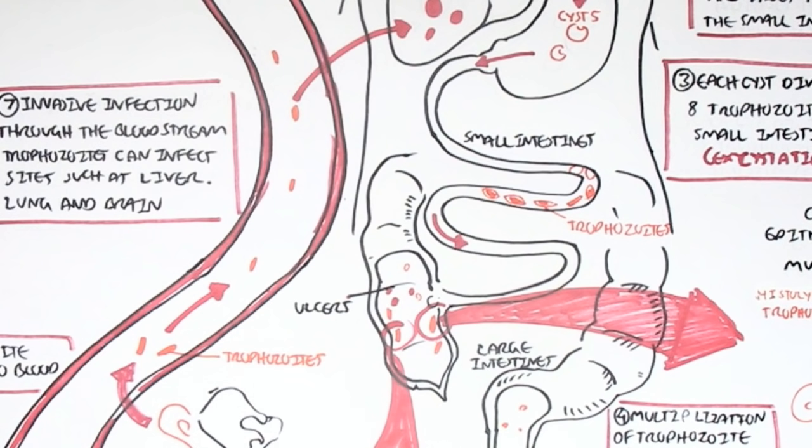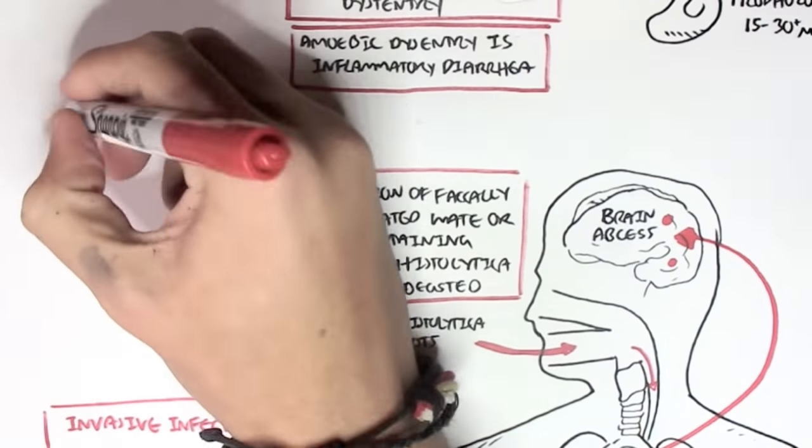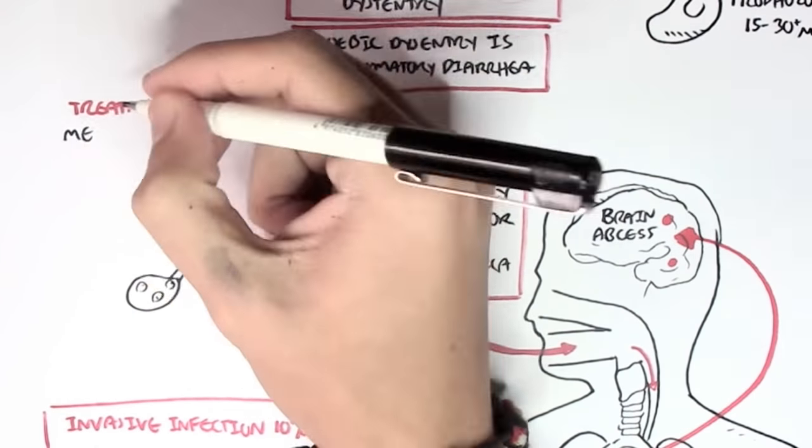Now, how would you treat amoebic histolytica infections, especially the invasive ones? Well, you're treated with a group of drugs called azoles, particularly metronidazole.